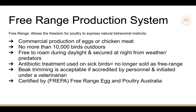Lastly, we have the free-range production system. Free-range means it allows the freedom for poultry to express natural behavioral instincts, and it is the commercial production of eggs or chicken meat. No more than 10,000 birds can be outdoors. Antibiotic treatment can be used on birds, but that means they will no longer be sold as free-range. Beak trimming is also acceptable if accredited by personnel and initiated under a veterinarian. The free-range production system can be certified by the FREPA, meaning the Free-Range Egg and Poultry Australia.